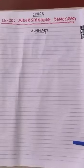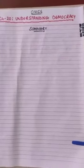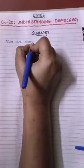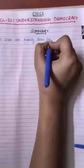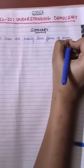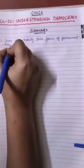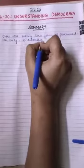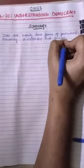Good morning dear students, let us revise our chapter understanding democracy. There are mainly three forms of government: monarchy, dictatorship and democracy.